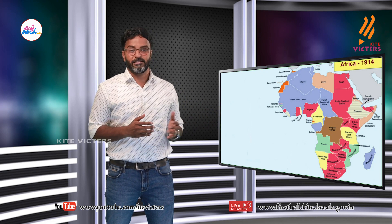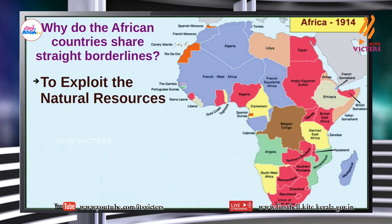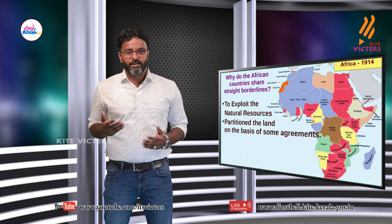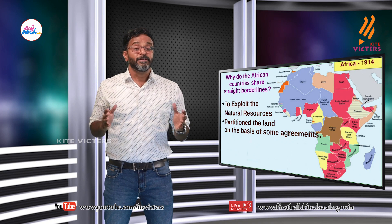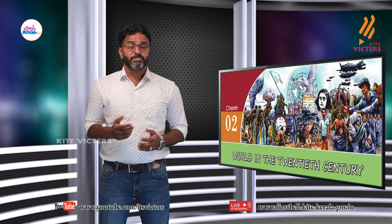Do you see anything special in this map? See, most of the borders of the nations are straight lines. Why do the African countries share straight border lines? To exploit the natural resources of Africa, the Europeans partitioned the land on the basis of some agreements, dividing African lands among themselves by simply drawing these straight lines.